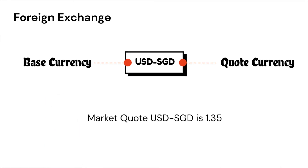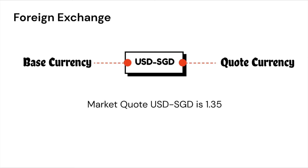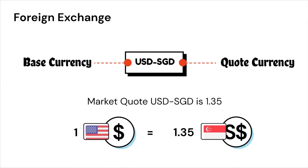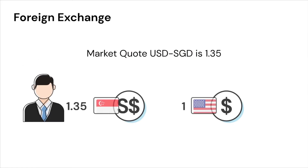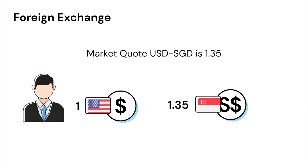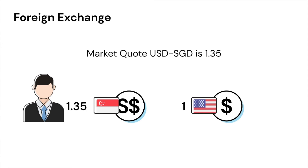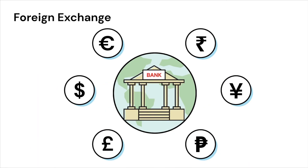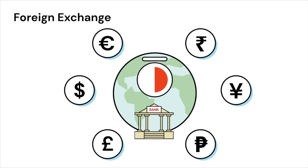So when the markets quote USD to SGD to be 1.35, it means that the price of one US dollar is 1.35 Singapore dollars. In other words, it will cost you 1.35 Singapore dollars to buy one USD, or conversely, you will get 1.35 Singapore dollars for one US dollar that you sell. The foreign exchange market is the largest in size in the world and trades continuously 24/7.